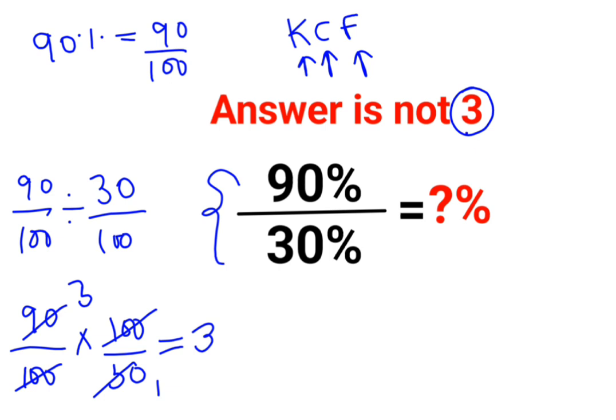But why did I say that answer is not 3? Because they are looking for the answer in terms of percentage. Now, please understand, when you had a percentage, you would divide it by 100 to get a number. Now, if you have a number and want to convert it into percentage, you need to multiply by 100. Correct?